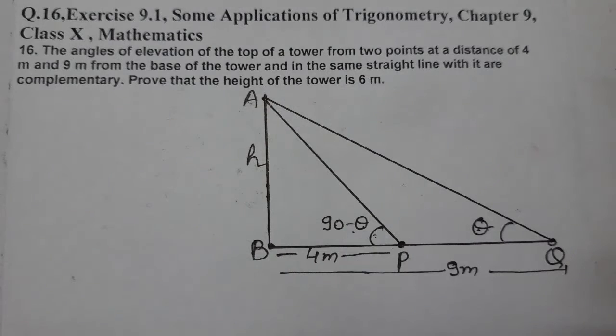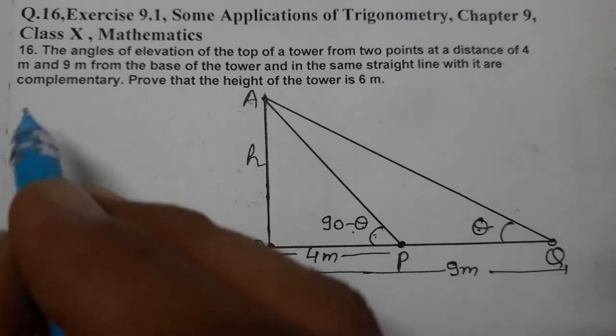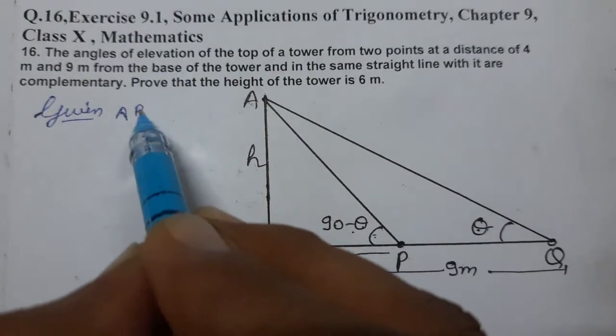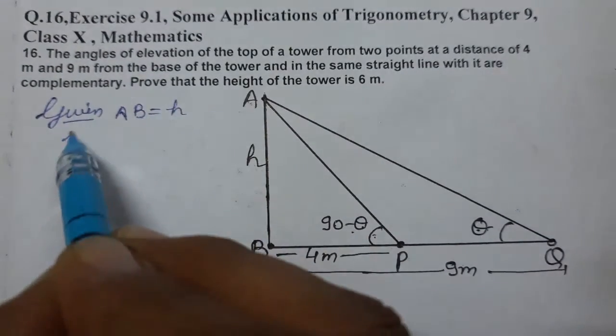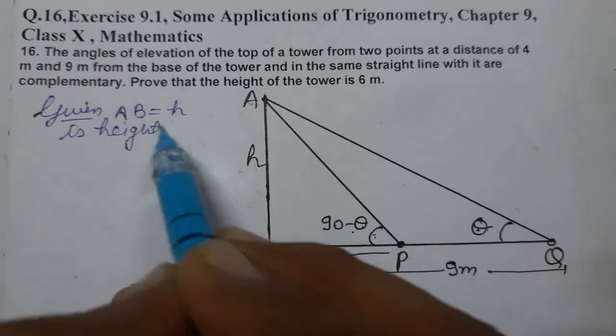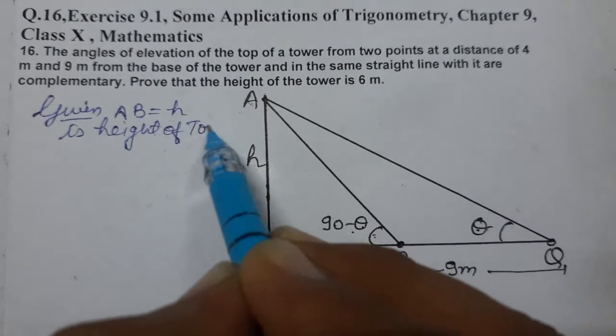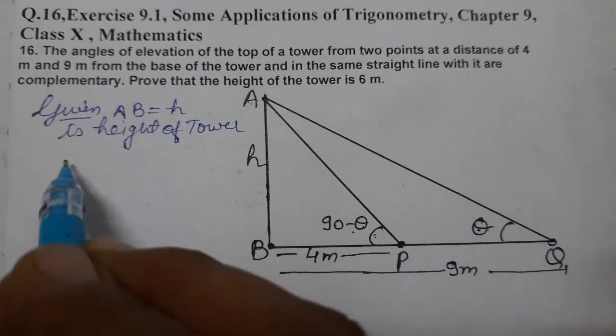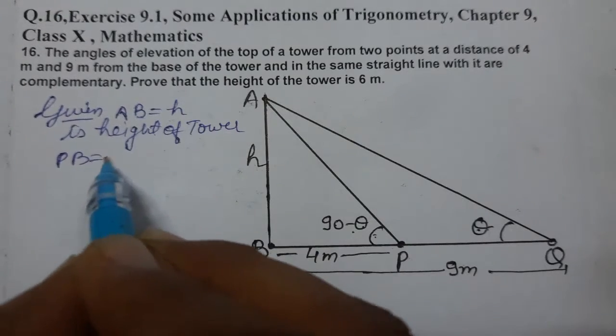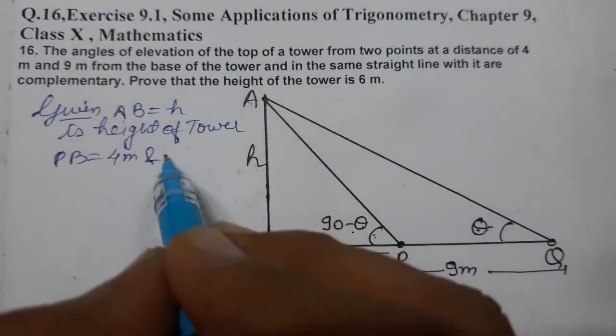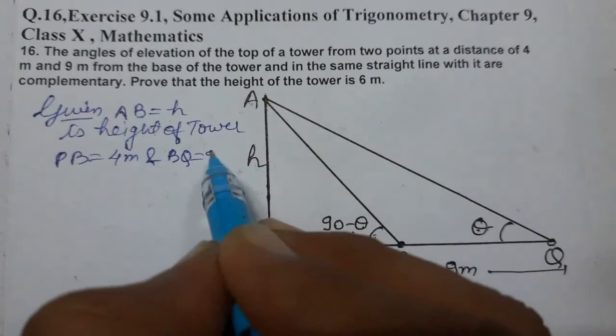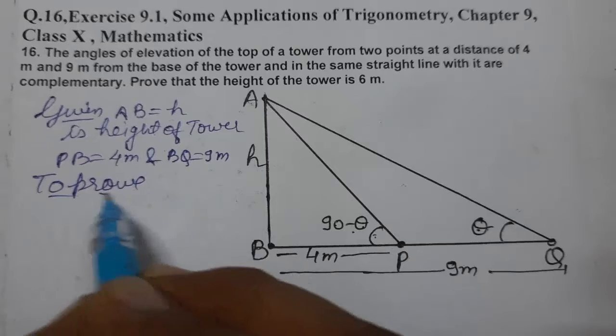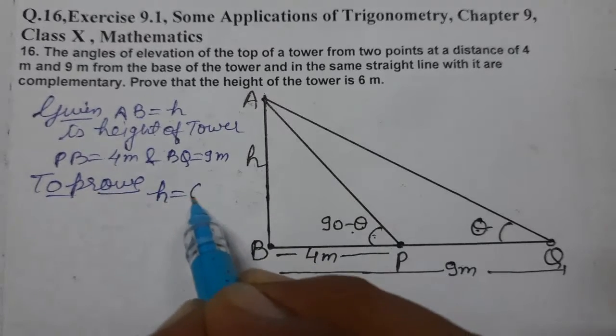First of all, what is given to us? Given: AB equals h is height of tower. P and Q are two points. PB is given as 4 meters and BQ is 9 meters. To prove: we need to prove h, the height of tower, is 6 meters.